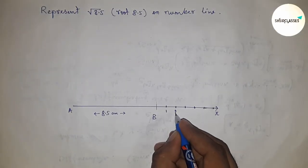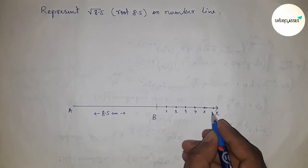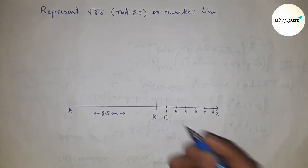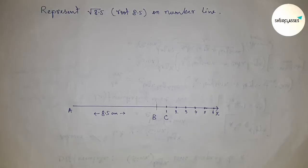Mark numbers on the line from B to X: one, two, three, four, five, and six. This is point C. Now we need to bisect the line AC.